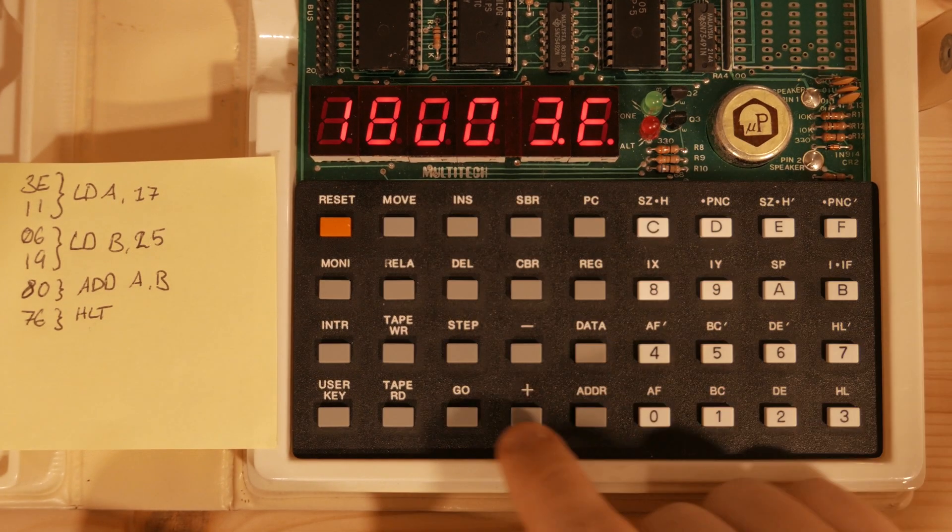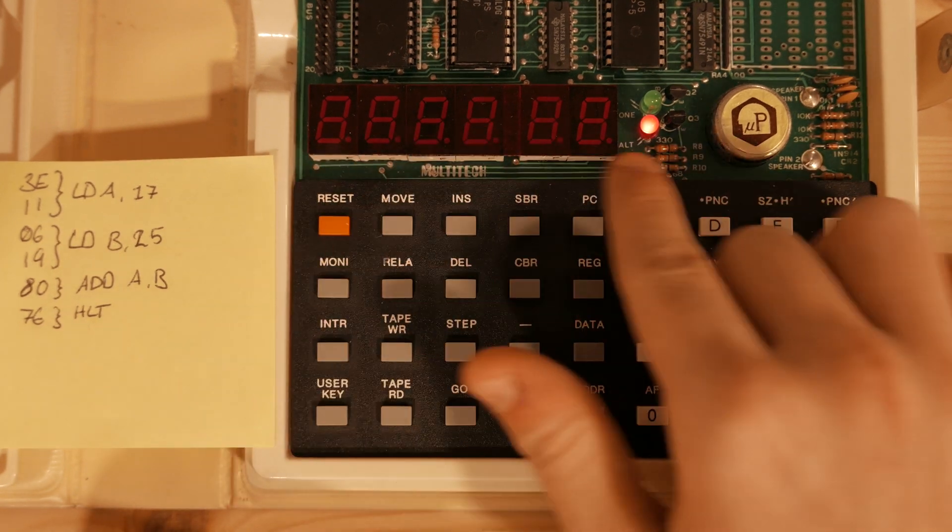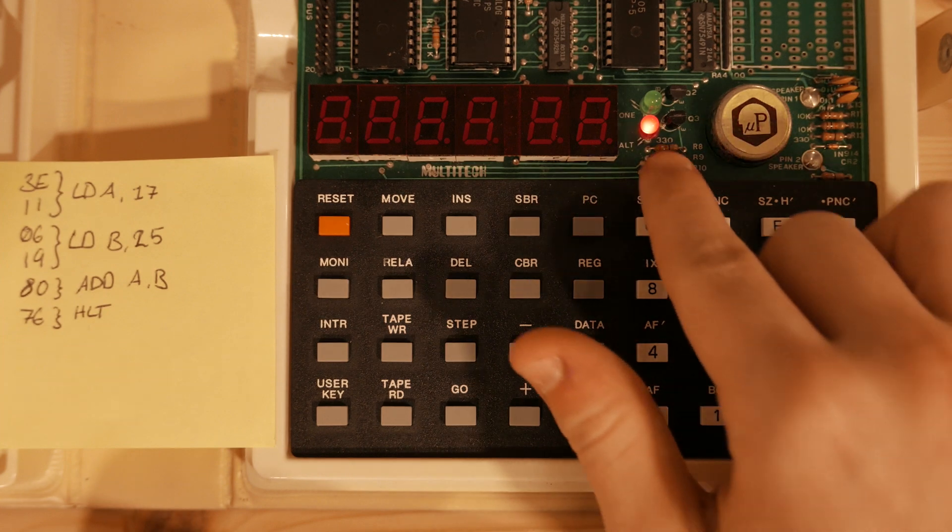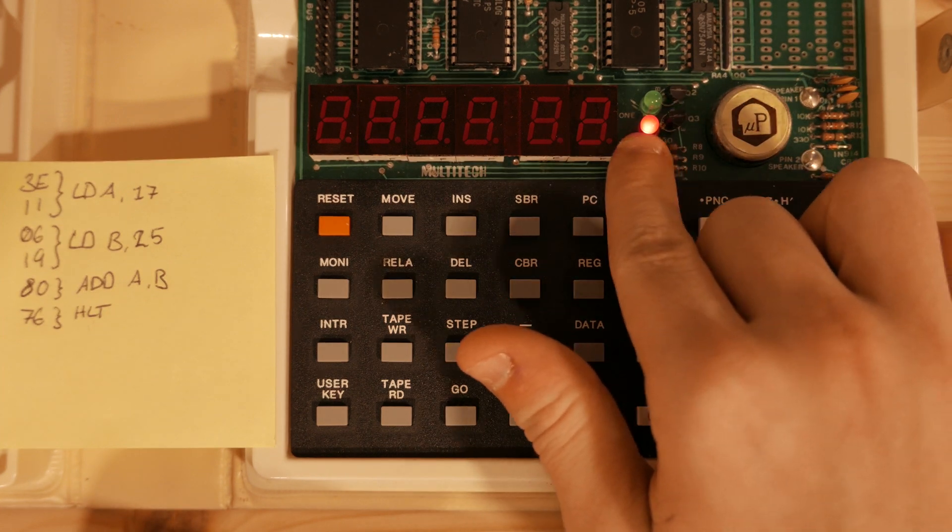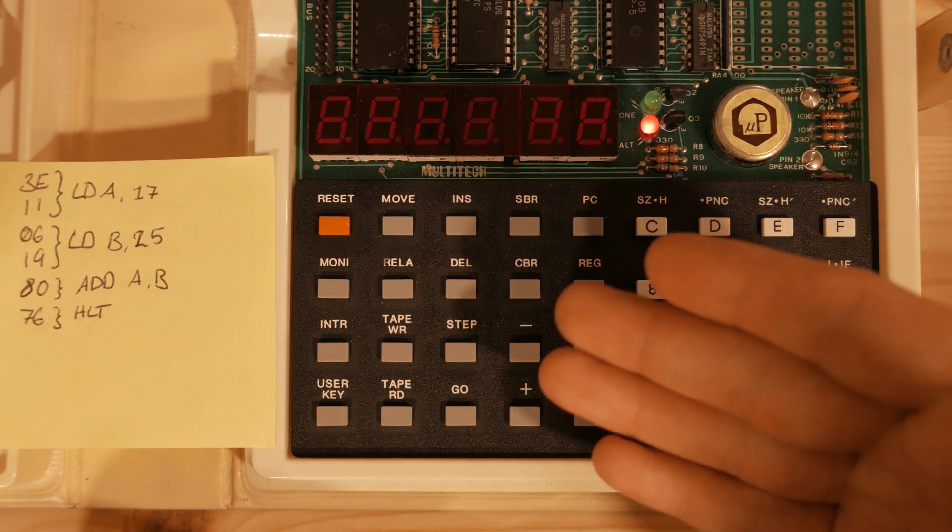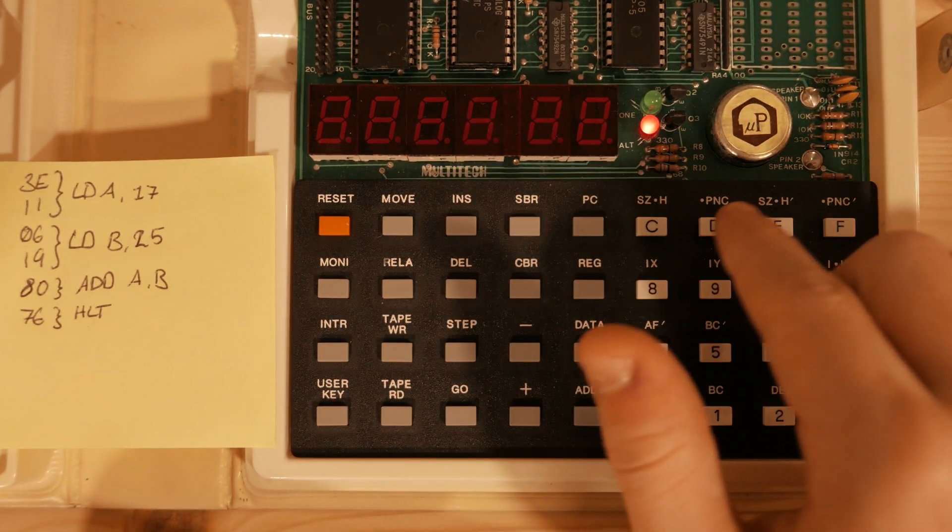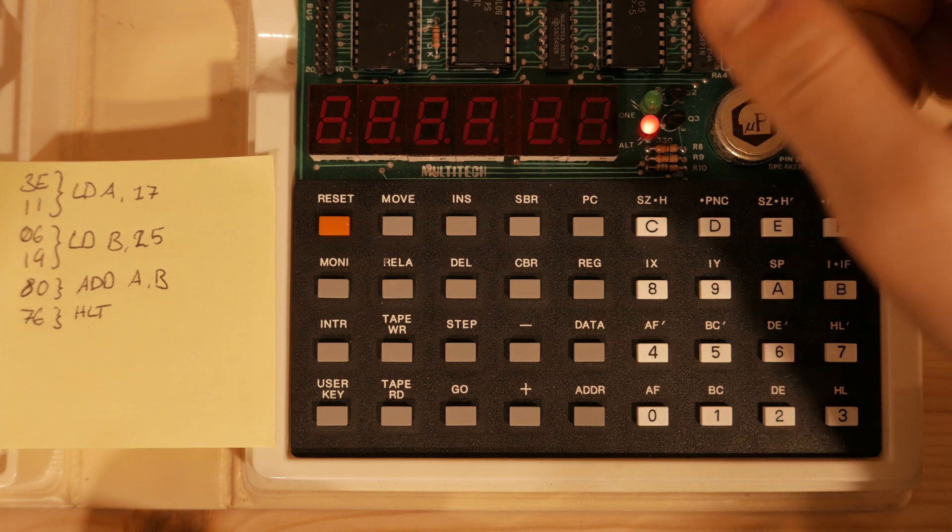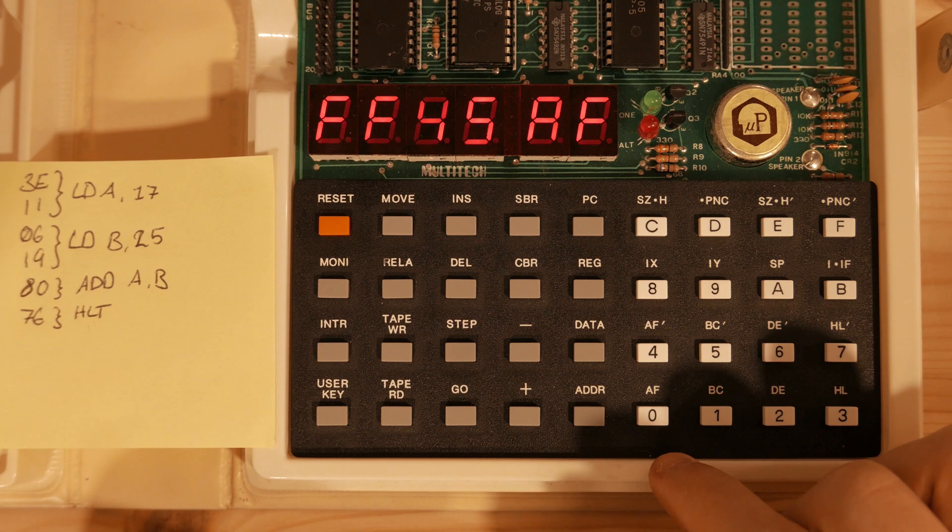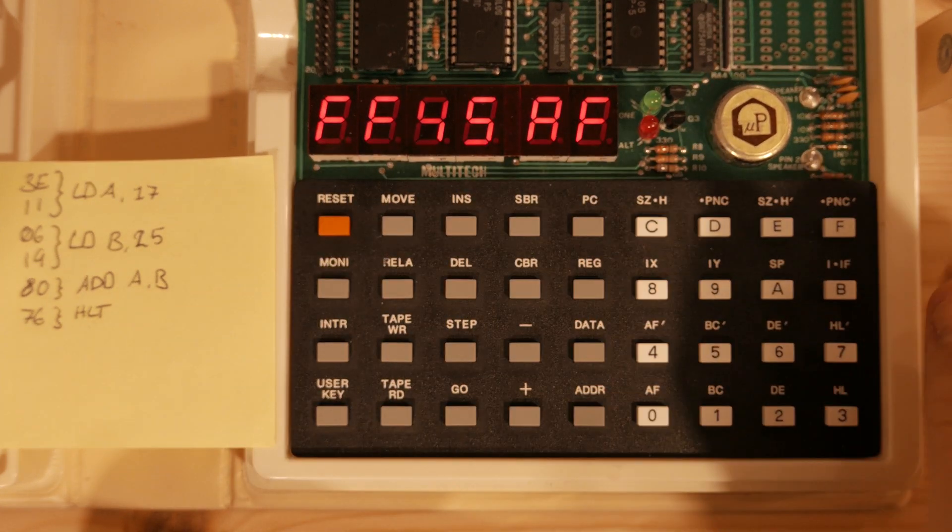Now if we reset, go to PC, and then hit Go, you can now see that the entire display is blank and this red bulb is on. This means that it has halted, so the only way to get it back is either pull the power, that will lose the memory, or just press Reset. If we go to Register A, we can see that it's been cleared as well.